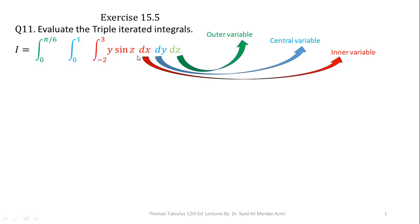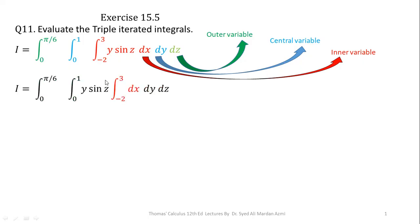In this question, first of all we will start the process of integration with respect to x, then on the outcomes of that we will apply integration with respect to y, and then with respect to z. The color combination is for your convenience so you can easily see that the limits of x are −2 to 3, the limits of y are 0 to 1, and the limits of z are 0 to π/6. In the next step, we will start performing our integration.